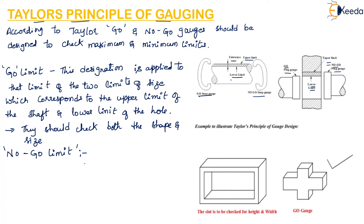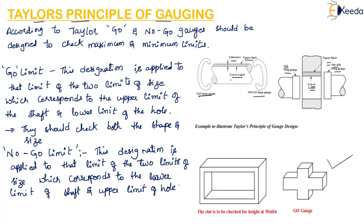It is the opposite feature of the go limit. The no-go gauge is used to check only one part of the feature of a component at a time, so specific discrepancies in the shape or size can be detected. A separate no-go gauge is required for each different individual dimension.